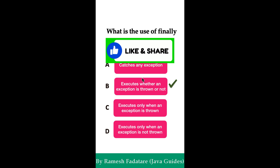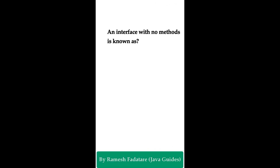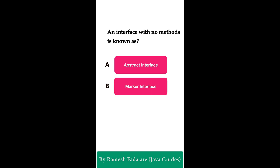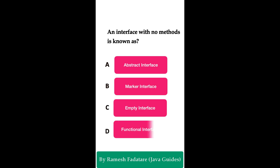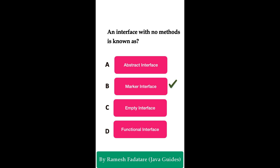Welcome to Java Quiz Series. Here is one more question: an interface with no methods is known as what? Option A: abstract interface. Option B: marker interface. Option C: empty interface. Option D: functional interface. You have five seconds to answer this question. The correct answer is Option B: marker interface.